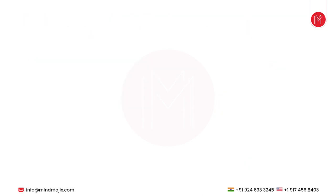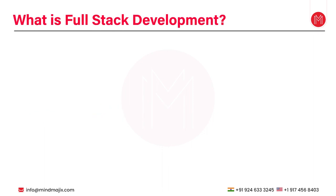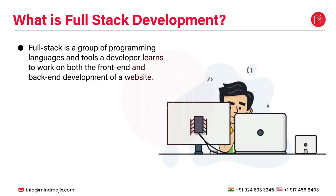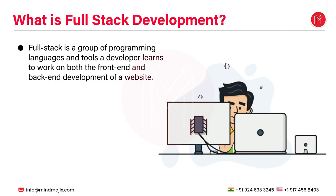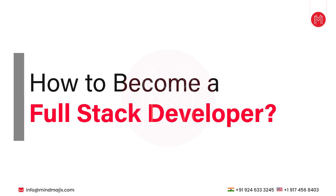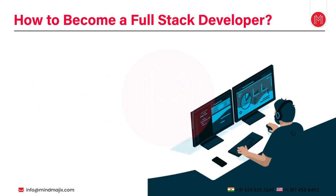What exactly is full stack development? Full stack development refers to the ability to work on both the front-end and back-end components of a web application. It involves handling tasks such as designing user interfaces, implementing server-side logic, managing databases, and ensuring the smooth functioning of the entire system. In other words, a full stack developer has a broad skill set and can take care of all aspects of a web application — from the user-facing interface to the server infrastructure.